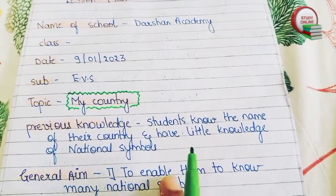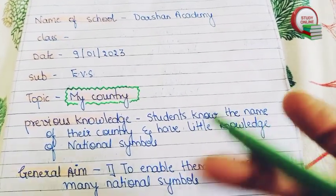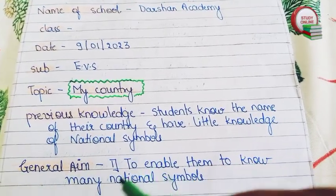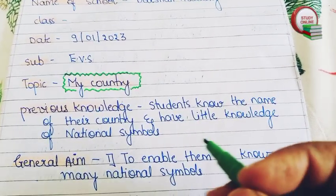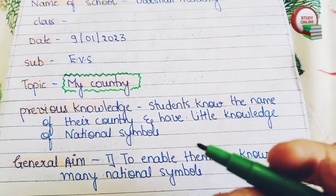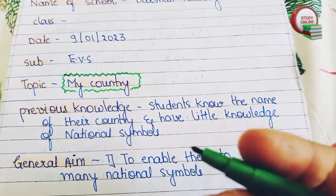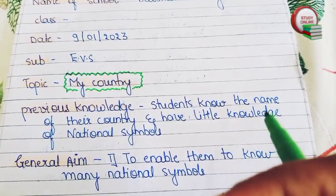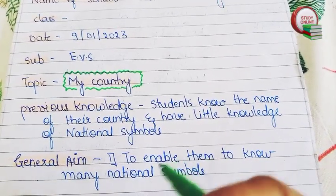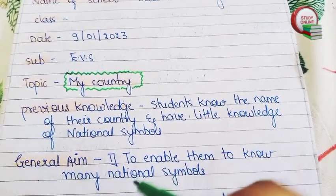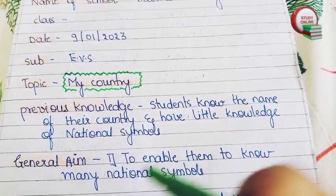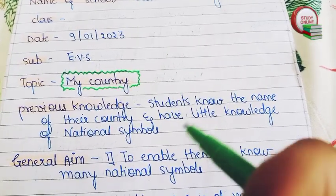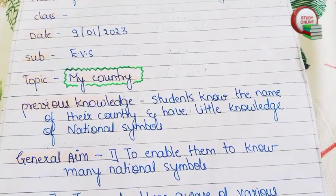Here you can see the 'Previous Knowledge' section — what students are already aware of. We have to mention all those things here. Students are aware of their country, they know the name of our country India, and they have a little knowledge about national symbols.